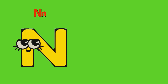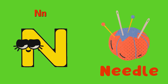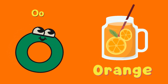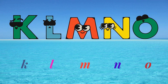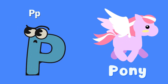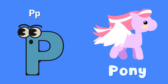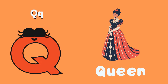N is for Needle. N-N-Needle. O is for Orange. O-O-Orange. P is for Pony. P-P-Pony. Q is for Queen. Q-Q-Queen.